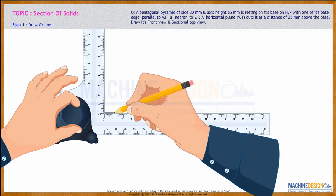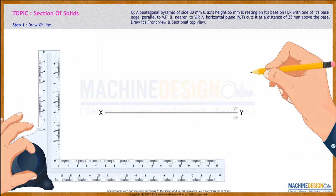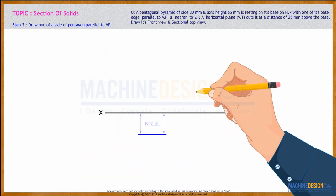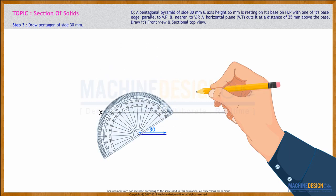First, we will draw the XY line. They have said that one of its sides is parallel to and nearer to VP. So this line is parallel to and nearer to VP. The side of the pentagon is 30mm, we'll draw the pentagon.